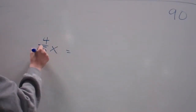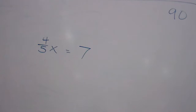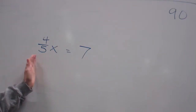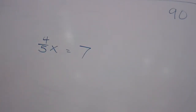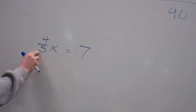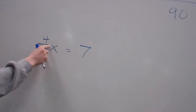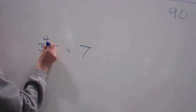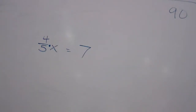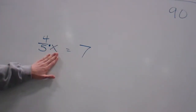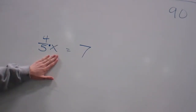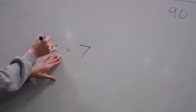So the very first one is 4 fifths times x equals 7. They did put one whole number in there just starting out. This may be a review, and that's okay. Now, does anybody remember me saying I need to get the x by itself to figure out what x is? Right now it says times 4 fifths.